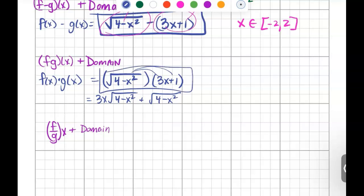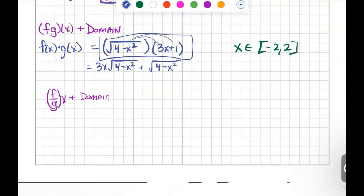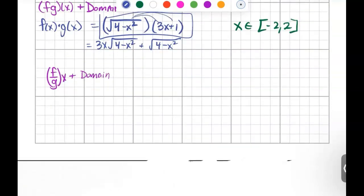And again, the domains are going to be the same because nothing really has changed here. It's still going to be negative 2 to 2. Now we're going to look at f divided by g of x. So this is wanting you to take the f function divided by the g function. So when I look at my top function, I'm still going to have negative 2 to 2 on the number line.